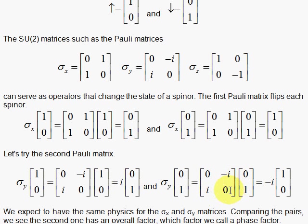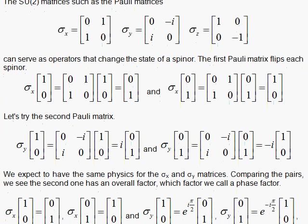So once again, the up state has been knocked down here, and this state has been flipped up. But we have coefficients here in the front. We don't expect the physics to be different with these two cases, X and Y. So let's look at these coefficients in a little more detail.